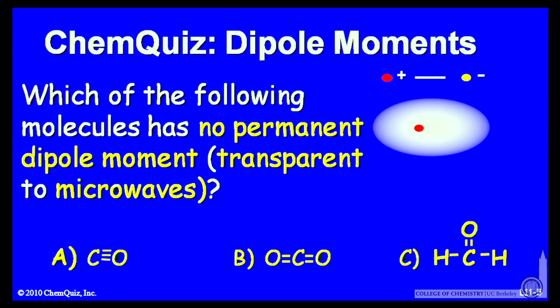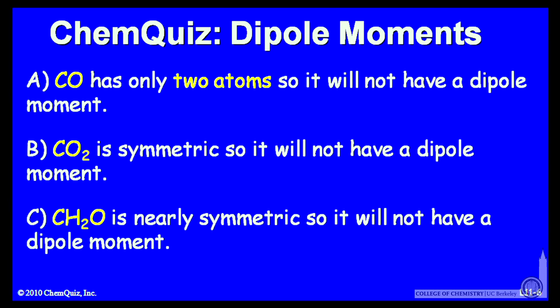Think about that for a minute and make your selection. Let's look at possible explanations for each of the answers. Answer A: carbon monoxide has only two atoms, so it will not have a dipole moment. Answer B: carbon dioxide is symmetric, so it will not have a permanent dipole moment. Answer C: CH₂O is nearly symmetric — symmetric enough that it has no dipole moment. Think about each of those and make another selection.